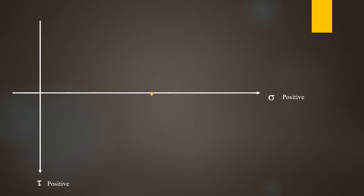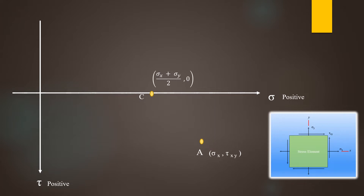To construct the circle we need to know the center and a couple of reference points. First, we plot reference point A, which has coordinates of sigma x and tau xy. The center of the circle has coordinates of (sigma x plus sigma y) divided by 2, and 0. Then we have point B, which is opposite of point A, with coordinates sigma y and tau xy. All these coordinates we need come from the stress element, and these points represent the normal and shear stress components on the element's right-hand vertical face and the top face.